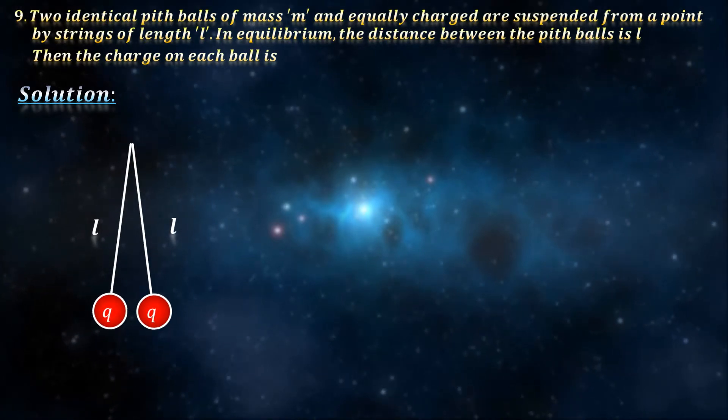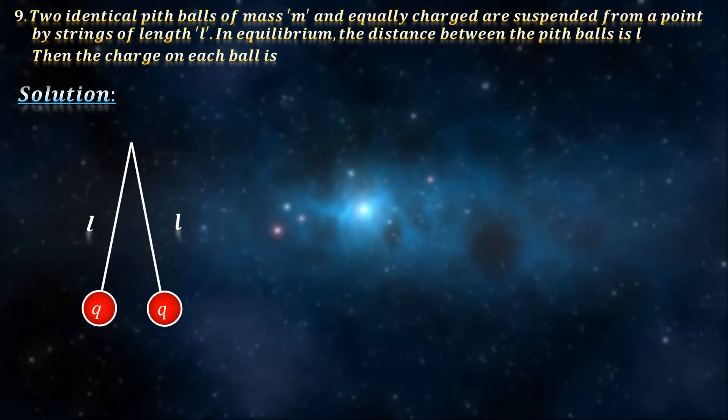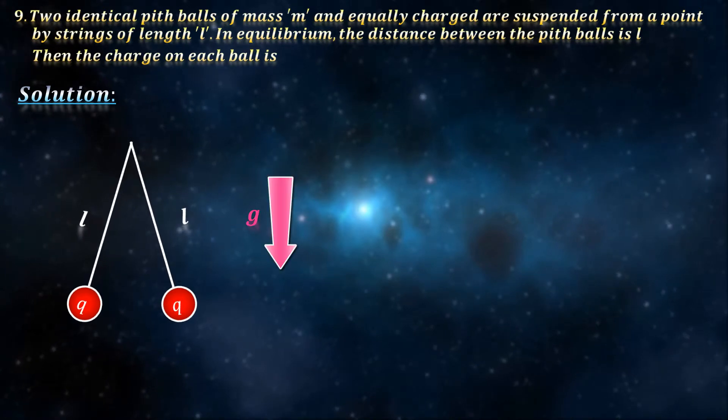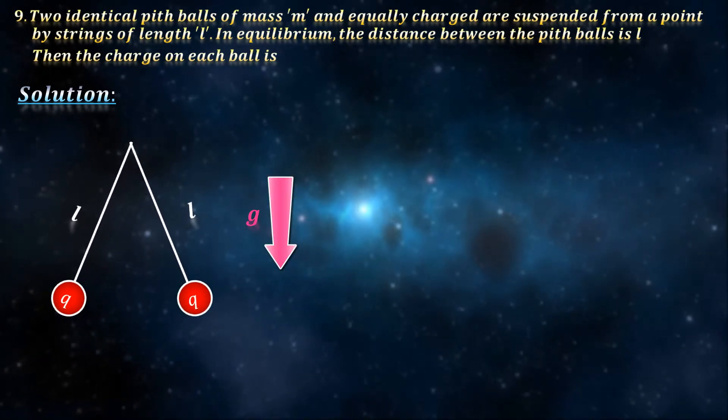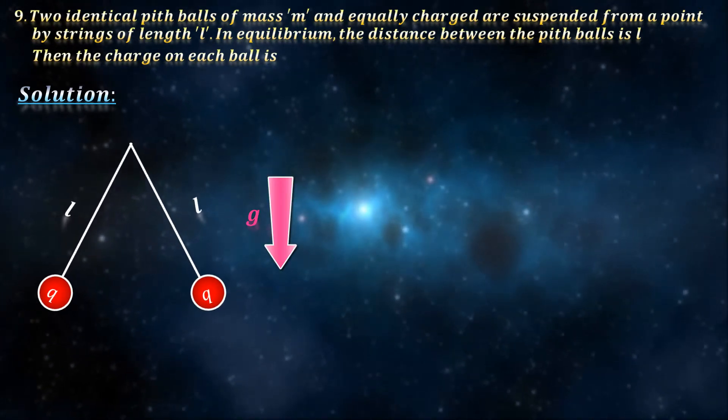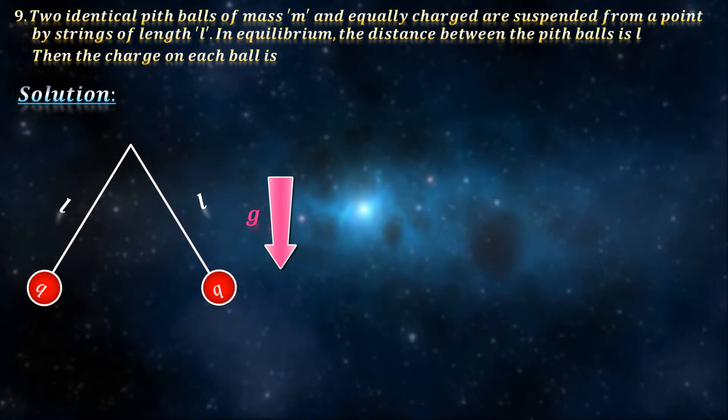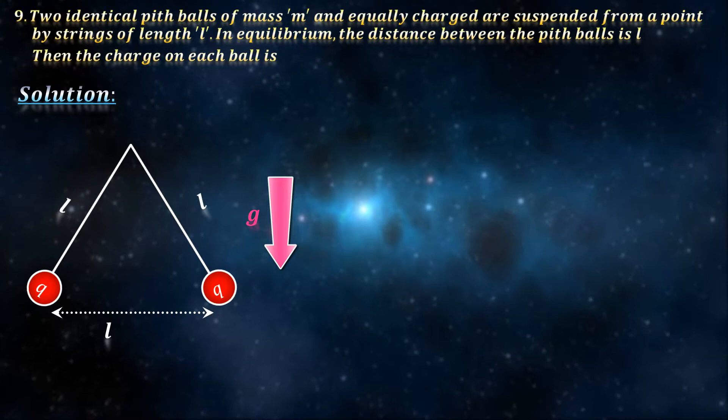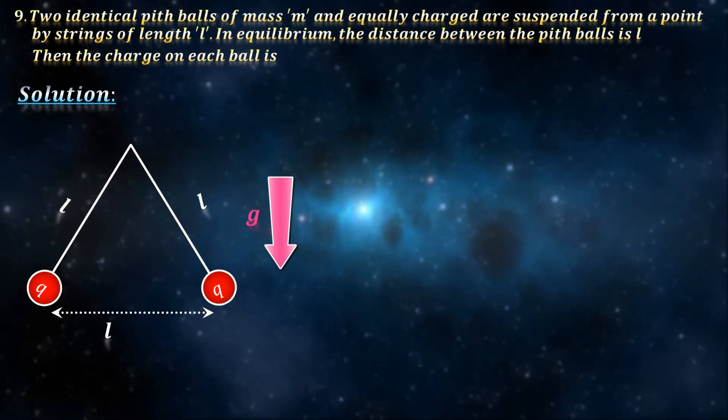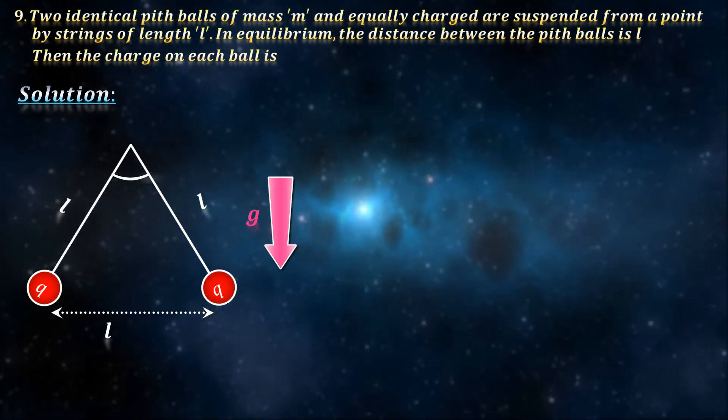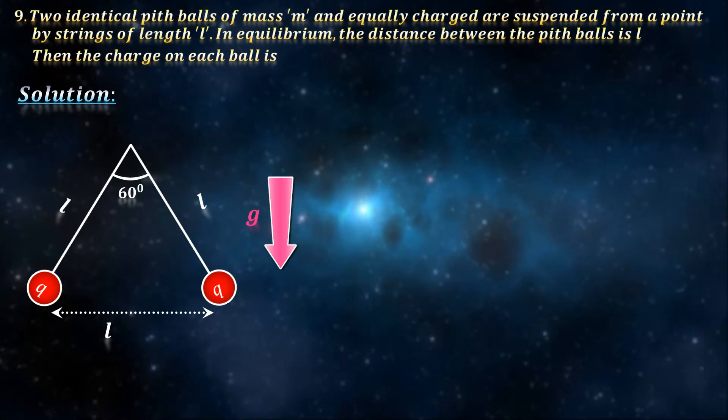But the moment you add charge on them, they repel each other, which makes them go away. At the same time, gravity tries to pull them back. When equilibrium is reached, all forces just cancel out and the balls just sit at rest. In this situation, at a distance L from each other. Making this angle 60 degrees, an equilateral triangle.